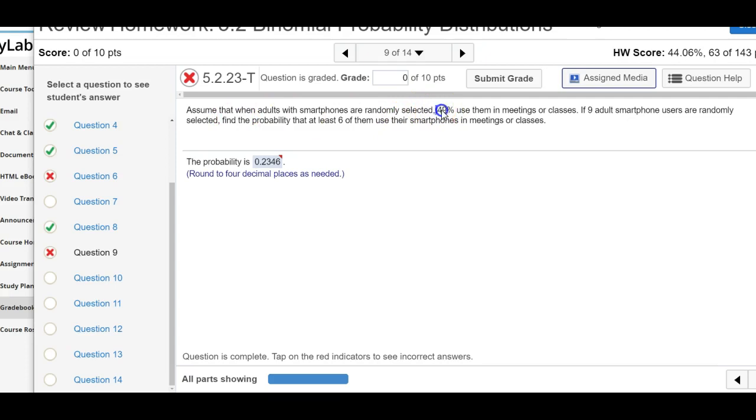So just kind of going back to the question real quick, the probability P would be 0.49 if nine adult smartphone users were randomly selected. So that tells us nine are in the population that was randomly selected, and here we want to find the probability that at least six of them use their smartphones.